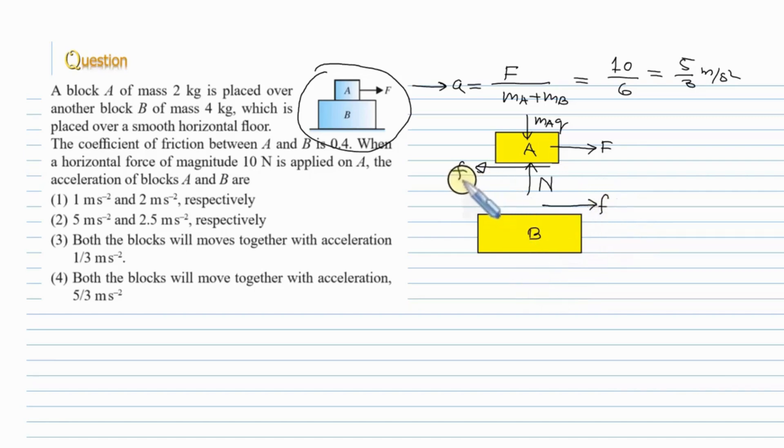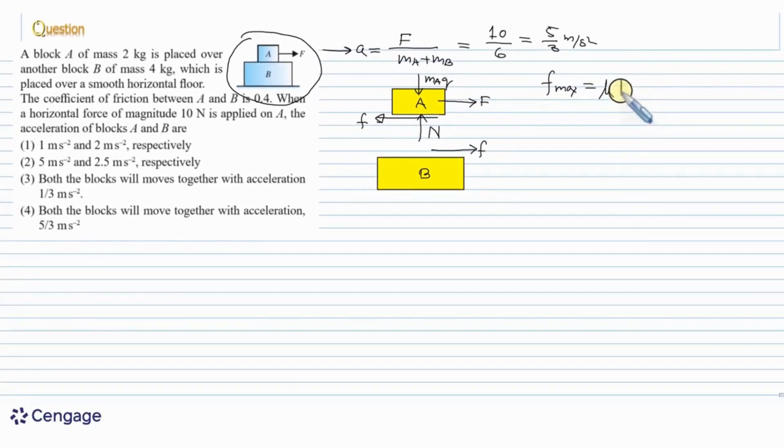We can find the maximum possible value of the friction force that is called the limiting friction. So, we can write F max equal to mu times normal reaction between the blocks. This normal reaction is equal to MaG. So, this is equal to mu multiplied by MaG.